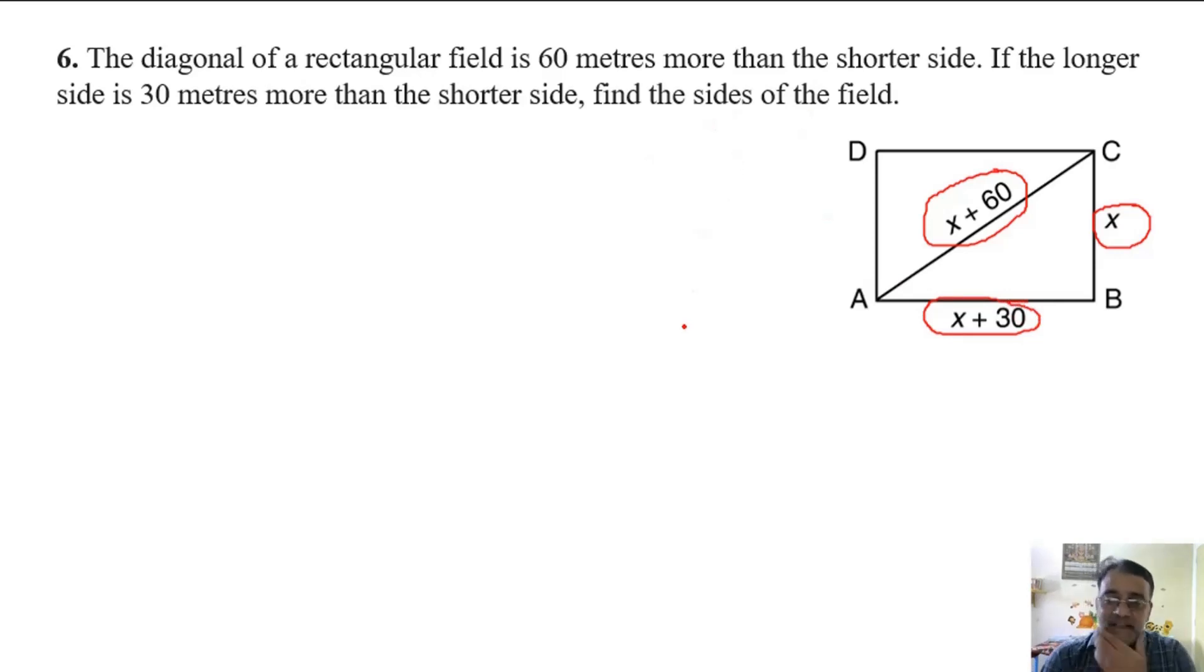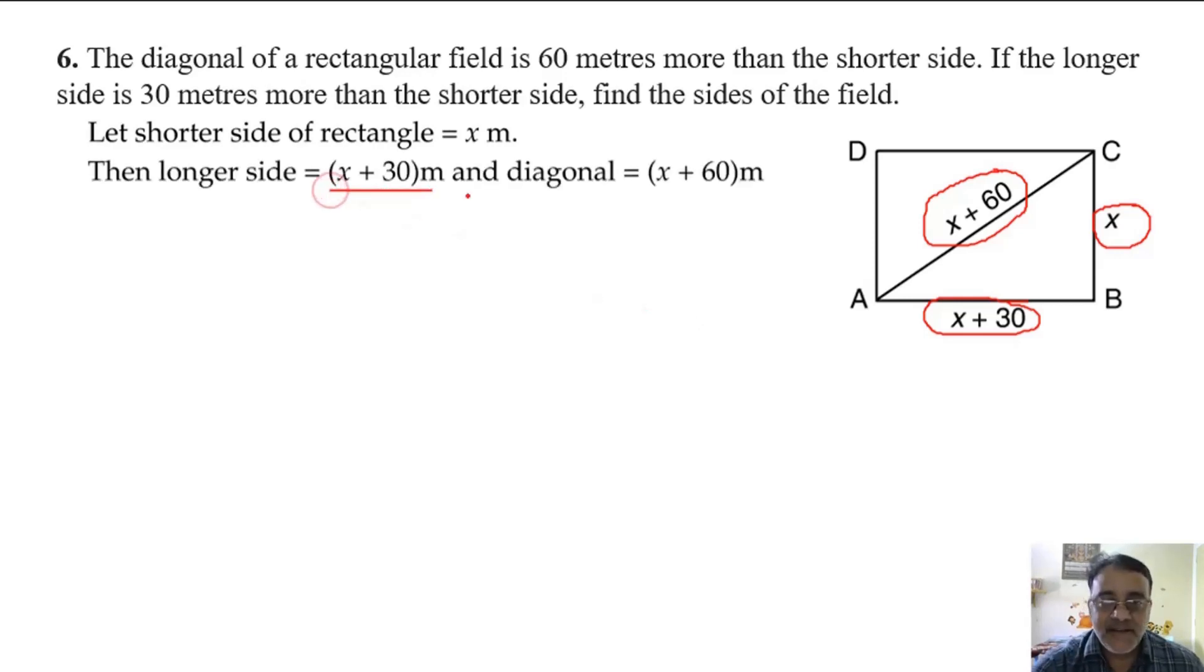The diagram is clear. Let the shorter side of the rectangle equal x meters. Then the longer side will be x plus 30 and the diagonal will be x plus 60.